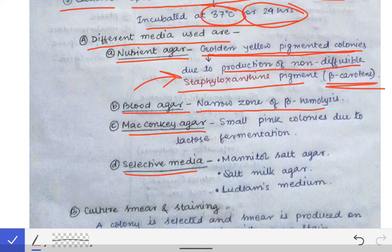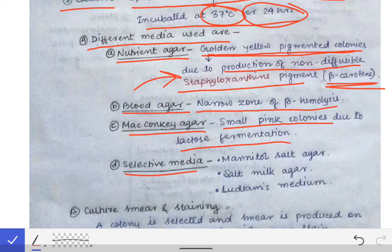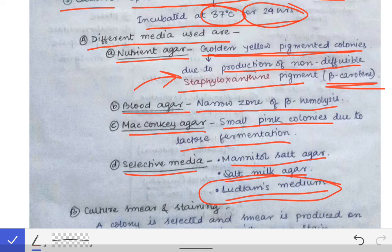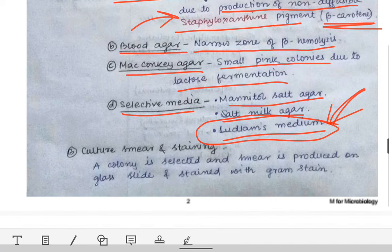On MacConkey agar, S. aureus produces small pink-colored colonies because it ferments lactose — lactose-fermenting bacteria produce pink colonies on MacConkey agar. Selective media are also used: mannitol salt agar, salt milk agar, and Ludlam's medium. Ludlam's medium is the selective medium for S. aureus — this may be asked as an MCQ.